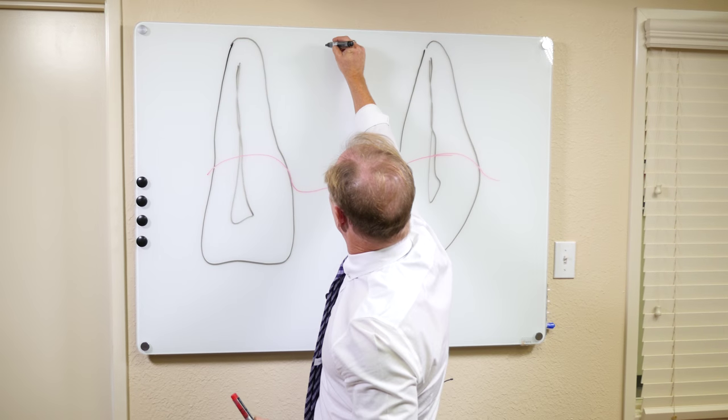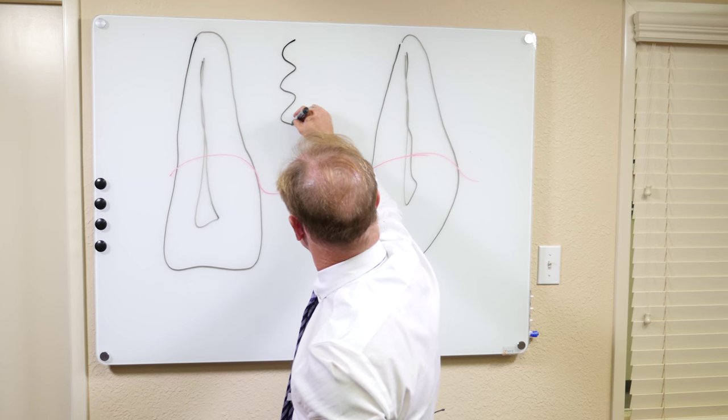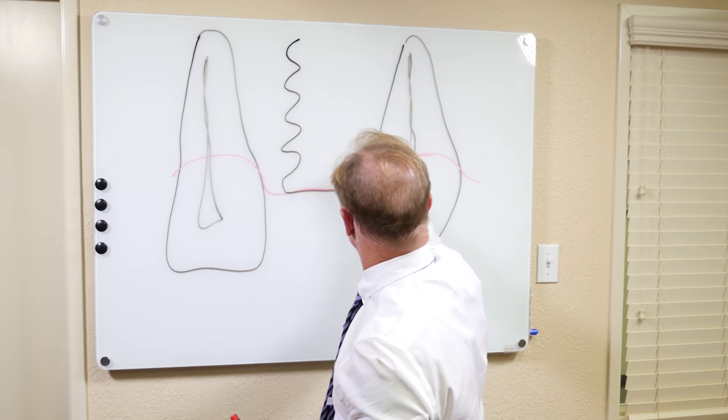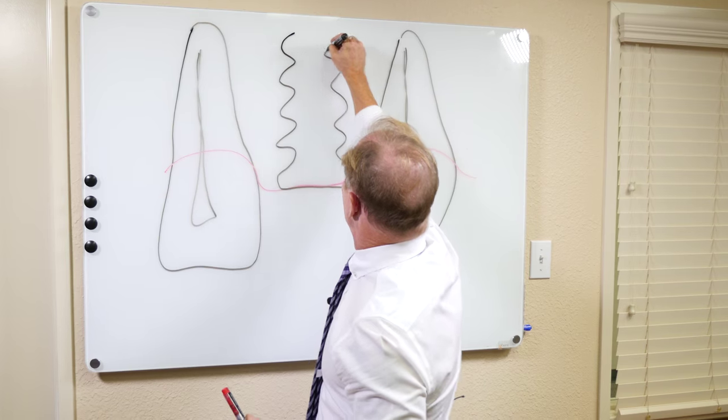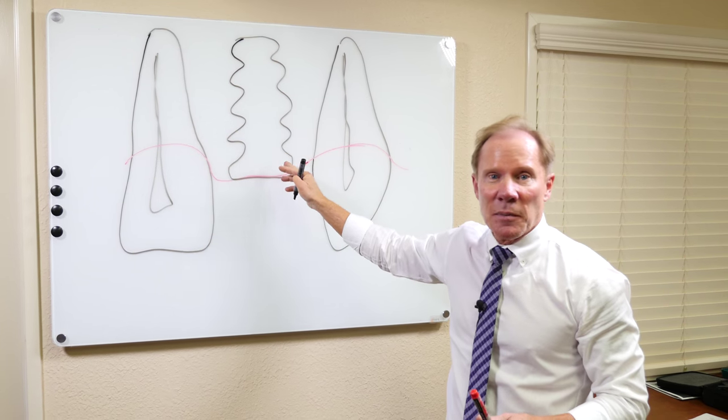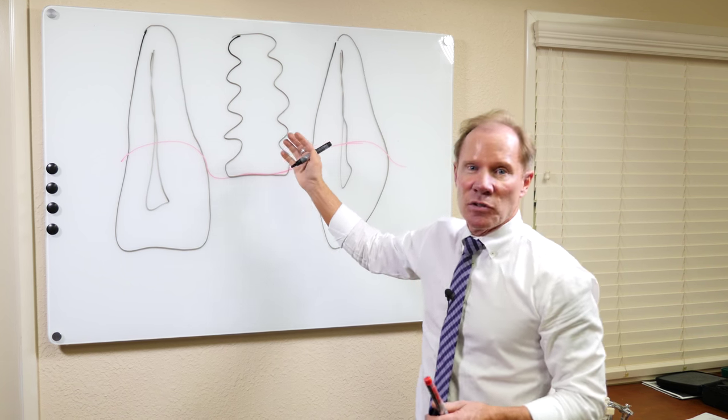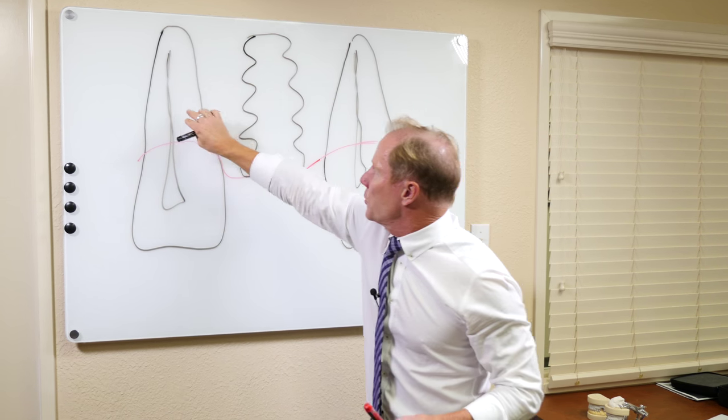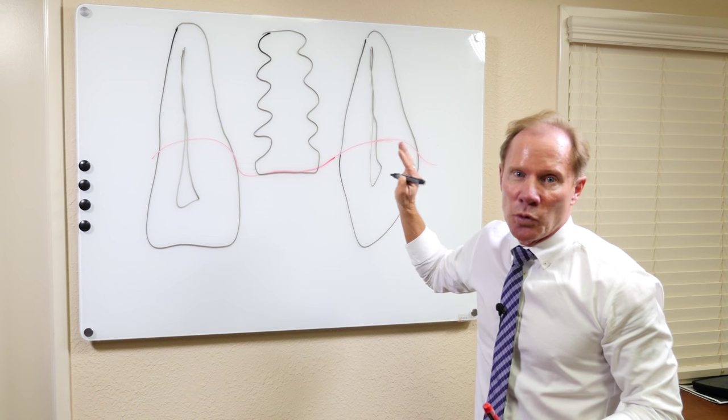So what an implant is, it's almost like an artificial root. The surgeon basically makes a hole in the bone and then puts an implant that's made of titanium into that hole and you can see it basically reproduces what your natural tooth roots look like.